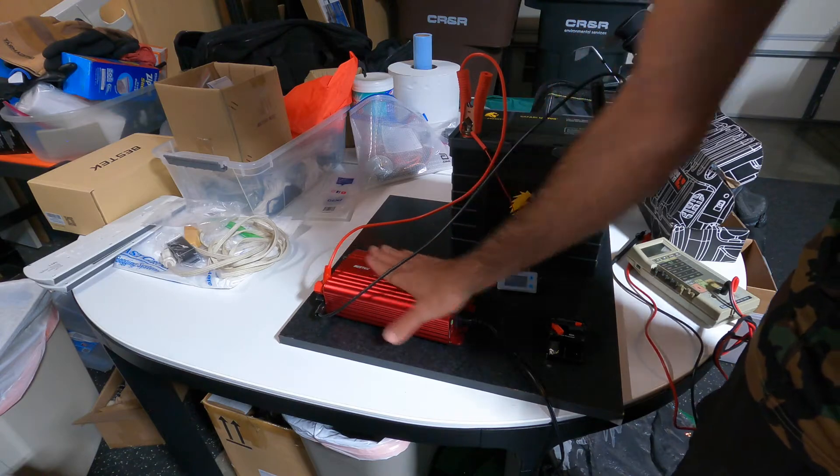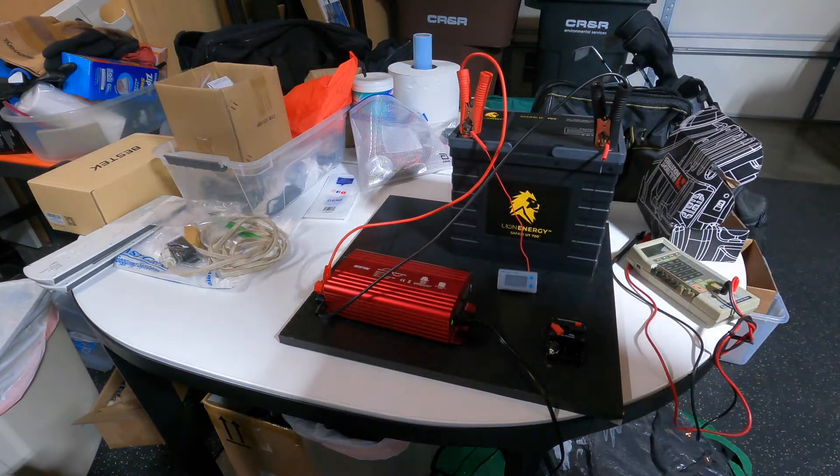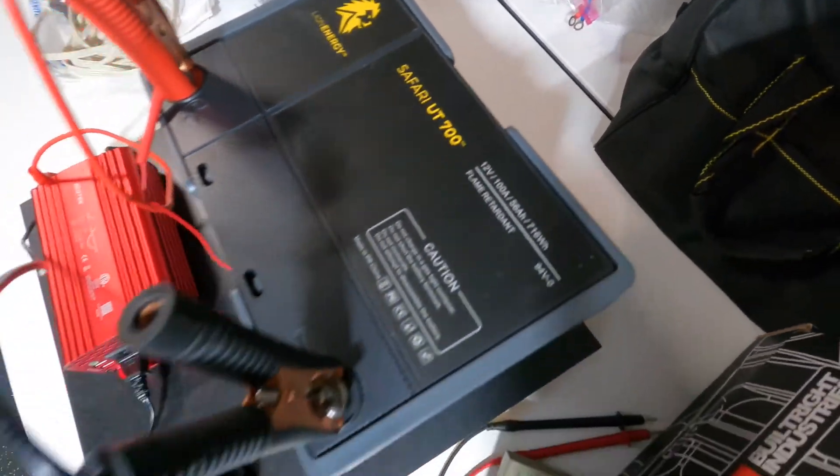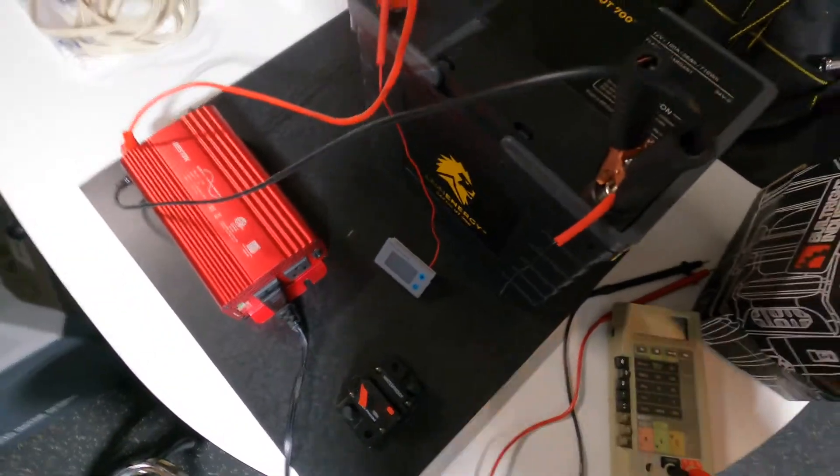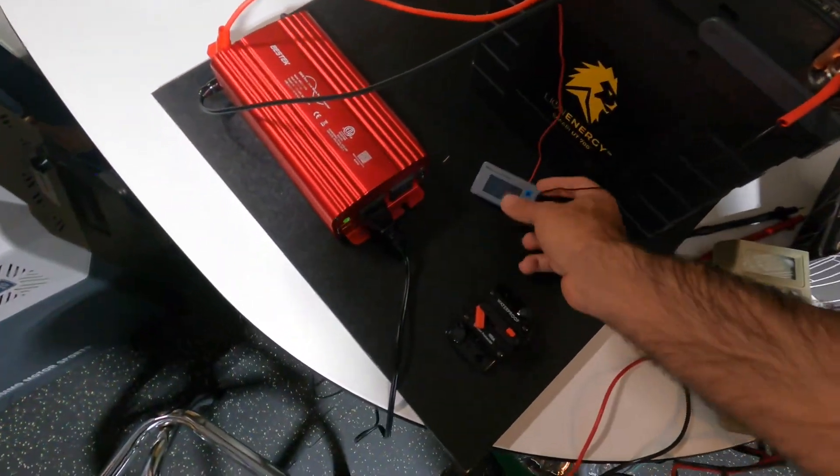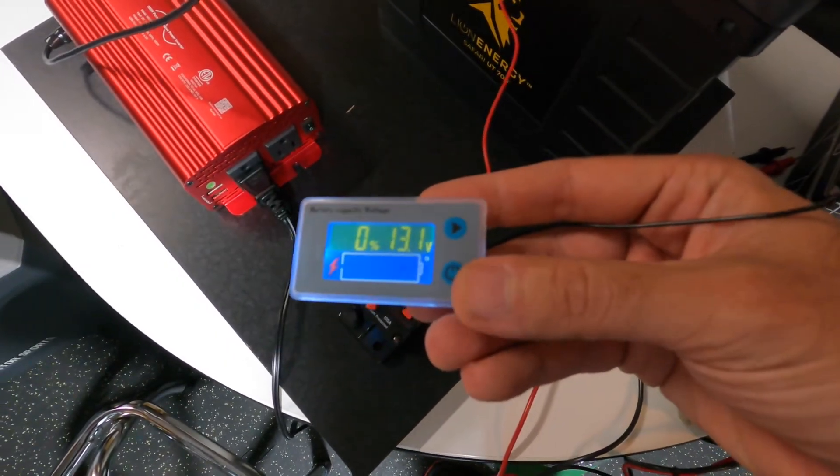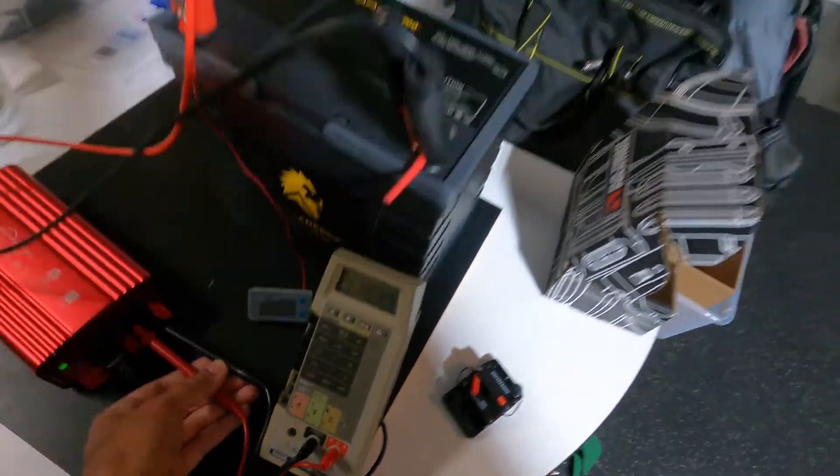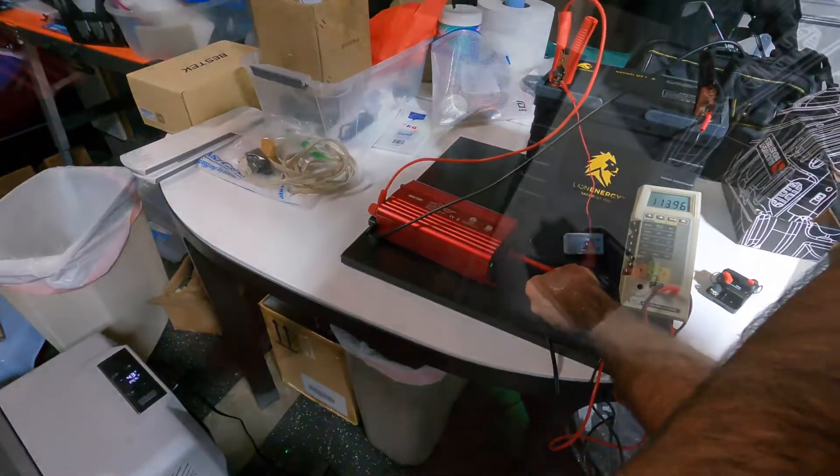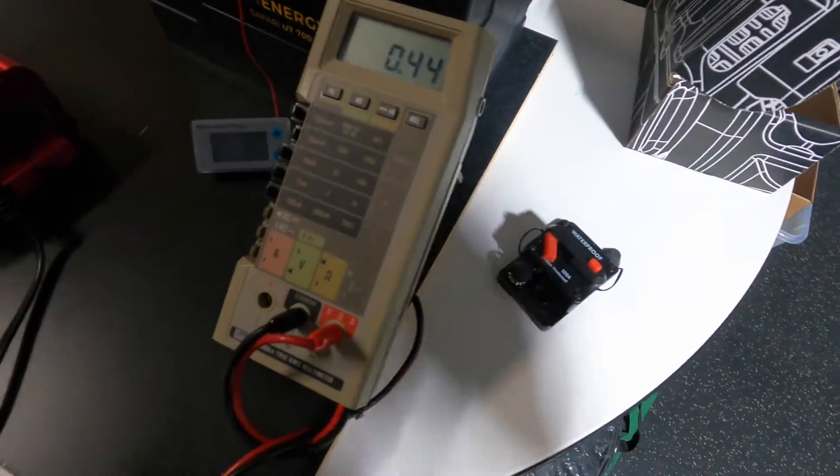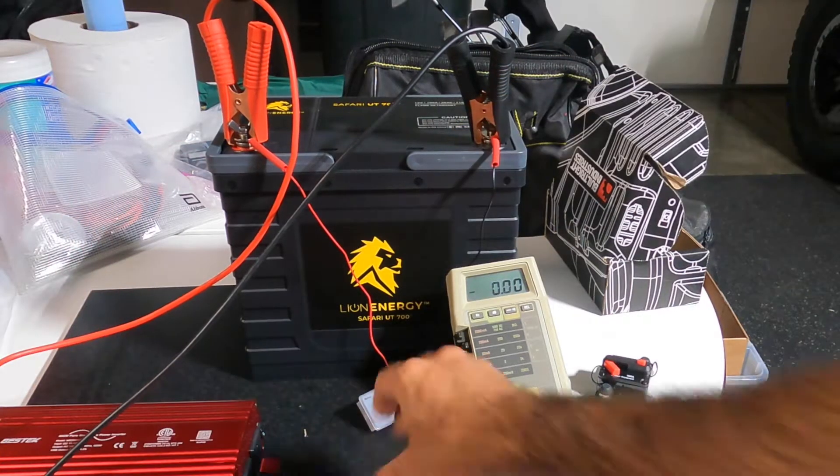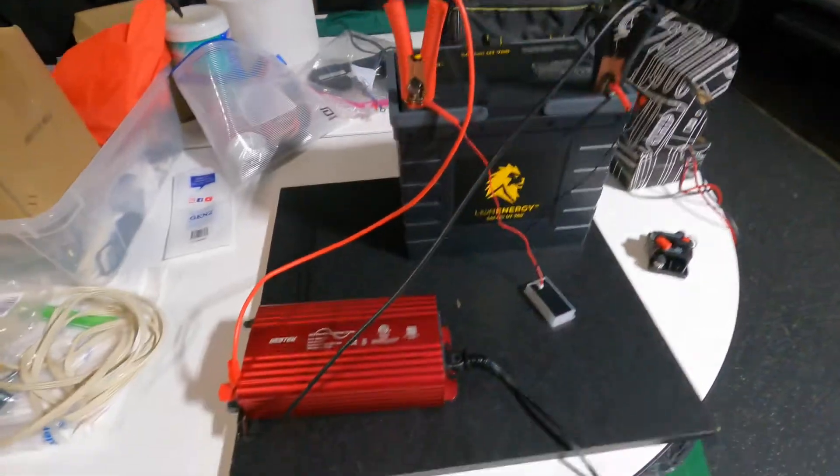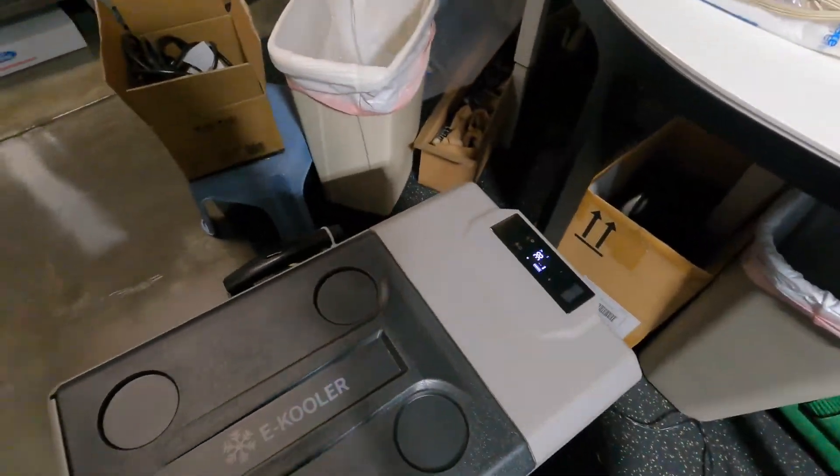This fan, I wouldn't say it's noisy but certainly you can hear it. Running this off the Lion Safari 700 and the alligator clamps are going to the inverter. We've also got this little battery meter. I'm getting 119, 118 on the multimeter, that's volts. And I can show you amps, it's five amps, 13.2. What is this thing reading? 13.1, that's pretty close.